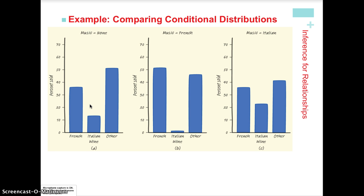A few things should jump out at you. In general, among the three categories of wine, 'other' seems to be purchased most often unless French music is playing. When French music is playing, more French wine was purchased. The other thing that should jump out is that Italian wine was purchased least frequently, especially when the French music was playing. Those are some observations that jump out at the beginning of our superficial analysis.